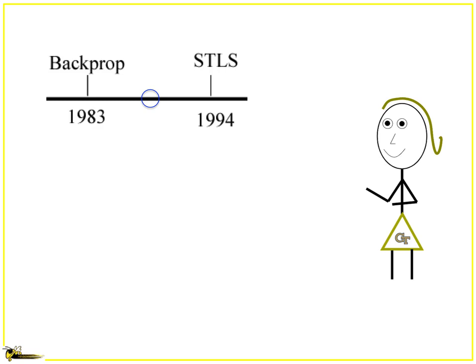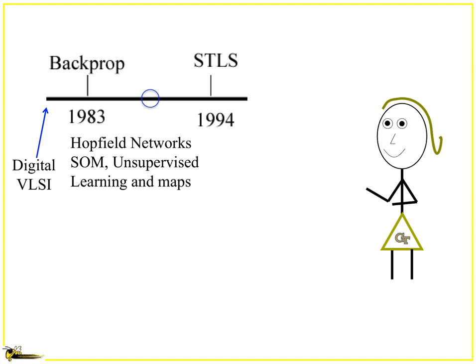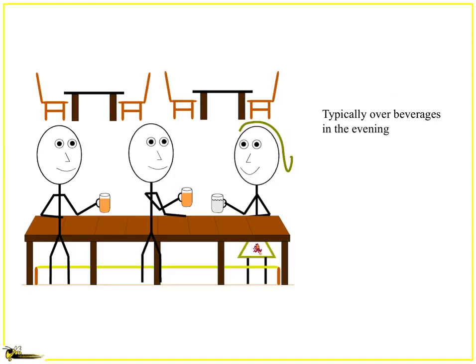Going back to the late 80s, digital VLSI was a big thing. Hopfield networks were around, and all of the unsupervised learning and maps were already starting to be discussed. There were discussions about analog computing — what could be happening? And a lot of times those happened in the evening over beverages.